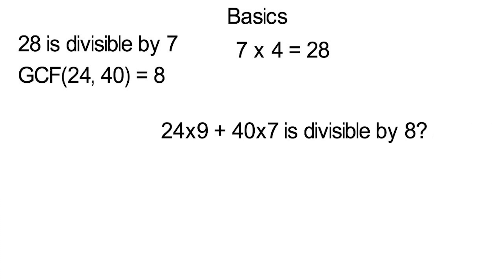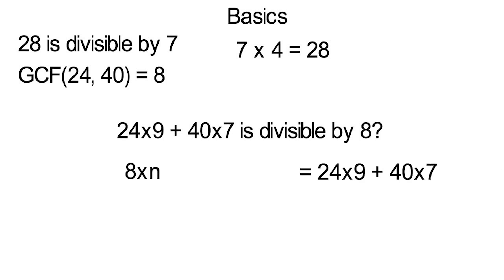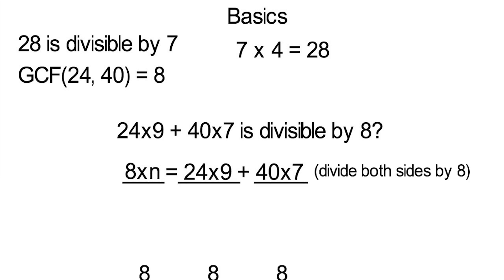But what if you were asked if 24 times 9 plus 40 times 7 is divisible by 8? Well, this is really saying, is there some integer that I can multiply by 8 to get that number? And you should be able to recognize that if you divide both sides by 8, which is the same as dividing each term by 8, you can cancel certain terms, like the 24 and the 8, and the 40 and the 8, leaving integers on top and 1s on the bottom. And this definitely leads to an integer. In our case, it's 62, but we really didn't care about that. We just wanted to find out if this was divisible by 8, and now we know that it is.